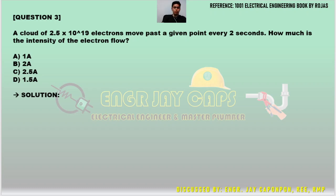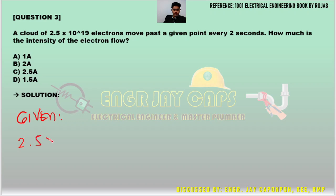Let's proceed to question number three: A cloud of 2.5 times 10 to the 19 electrons moves past a given point every 2 seconds. How much is the intensity of the electron flow? Let's break down all the given: Q equals 2.5 times 10 to the 19 electrons, and time t equals 2 seconds.